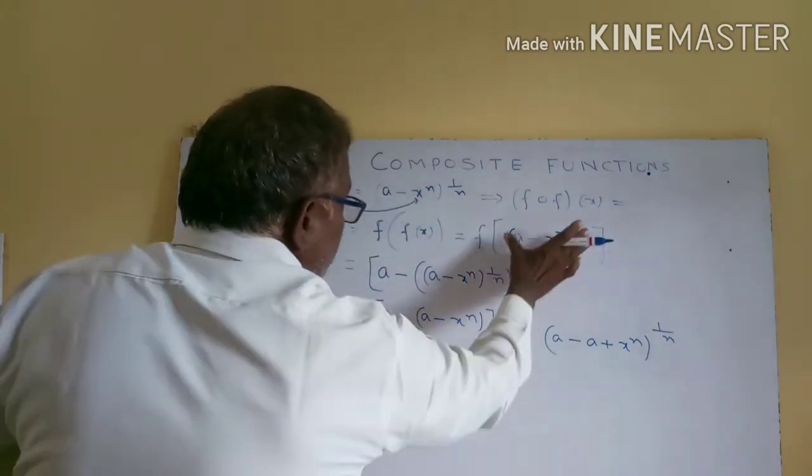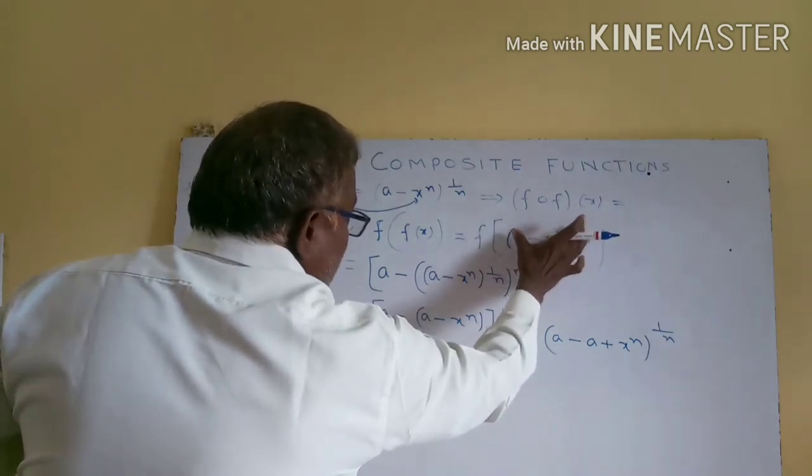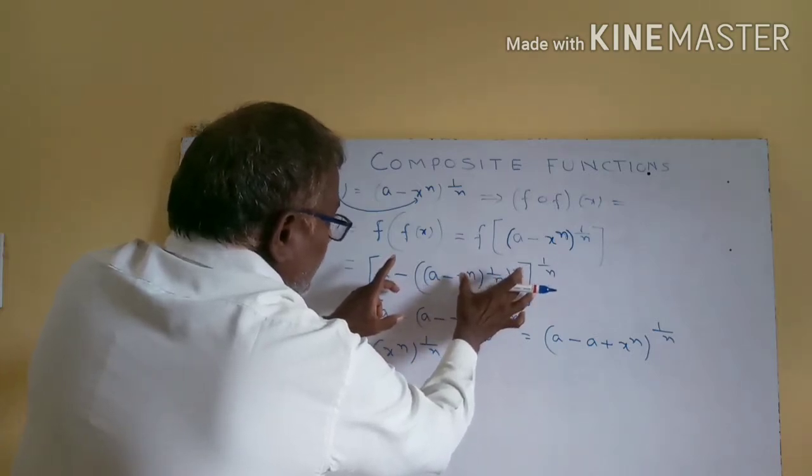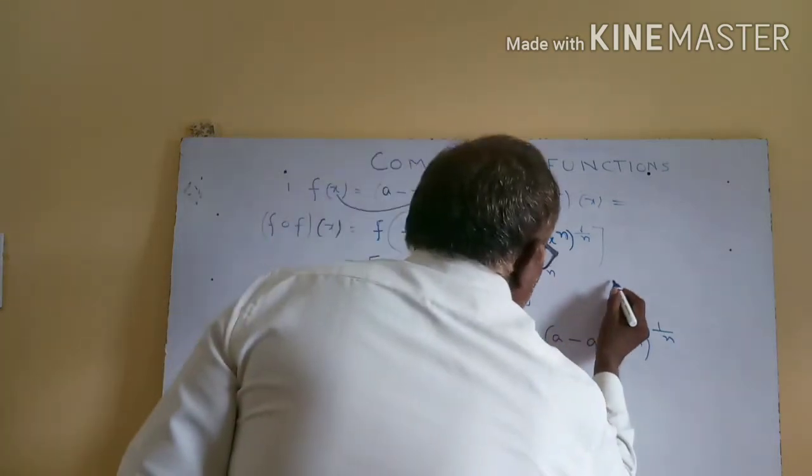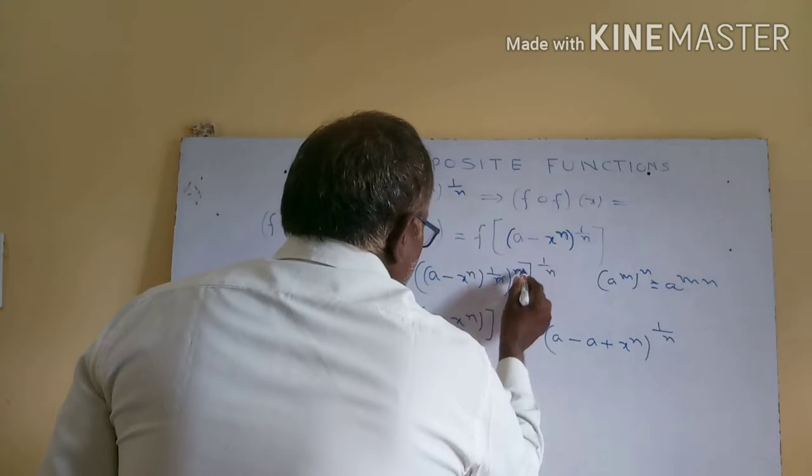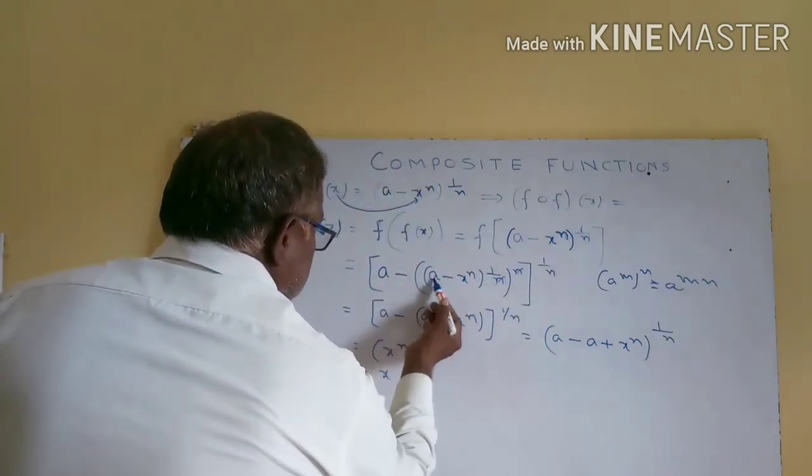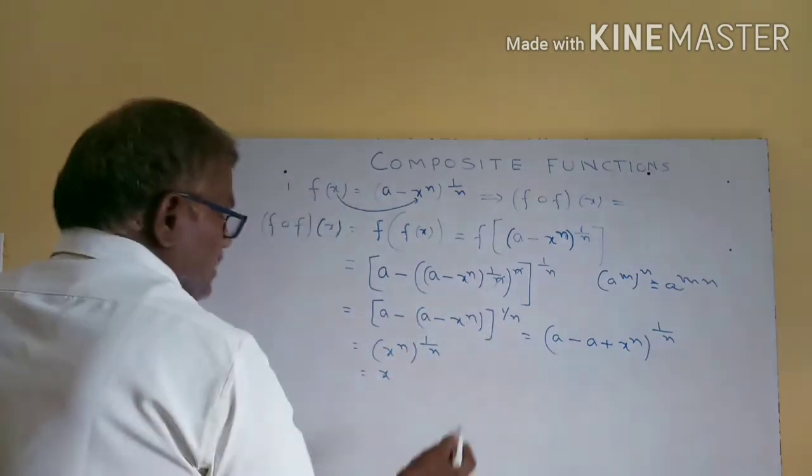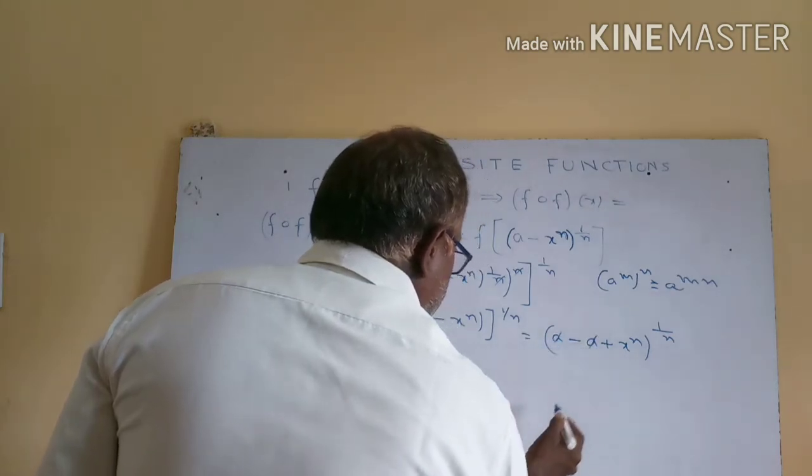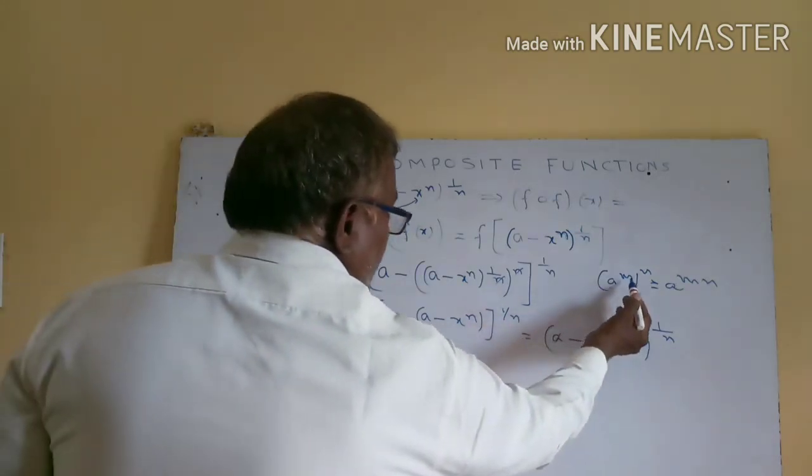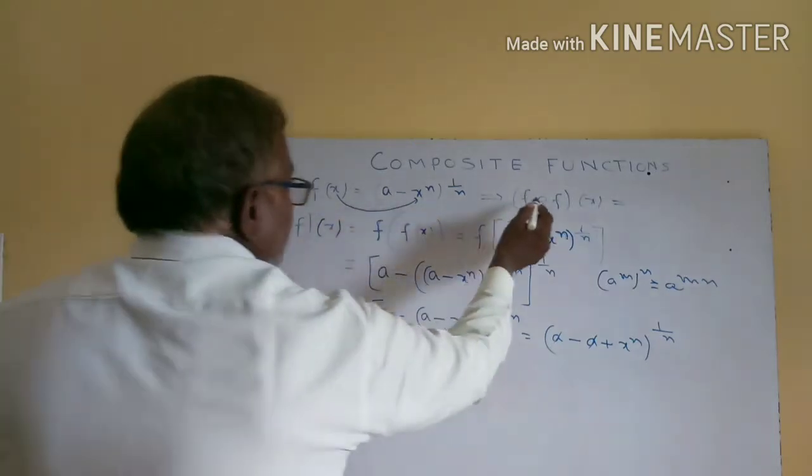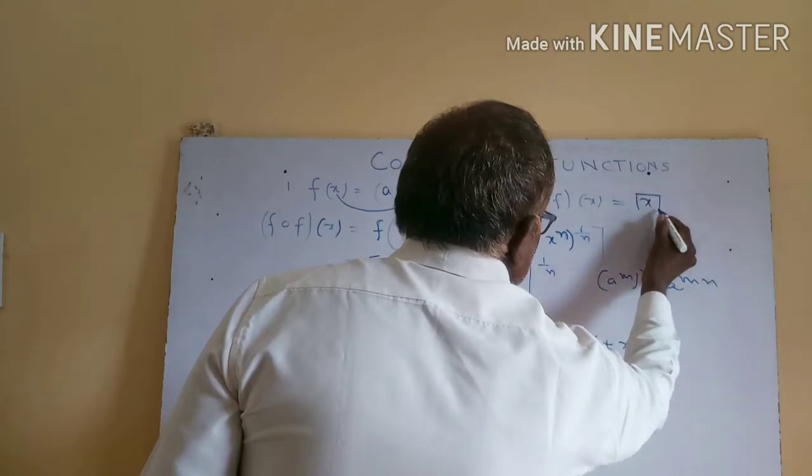This whole power m, because a power m whole power m is equal to a power mn, so n and n get cancelled. So remaining is a minus (a minus x power m) whole power 1 by m. Multiply with minus: minus into minus is plus x power m. a and a get cancelled. So finally x power m whole power 1 by m. Same: a power m whole power m equals a power mn, so get cancelled. That means finally f circle f(x) is equal to x. So this is the right option.